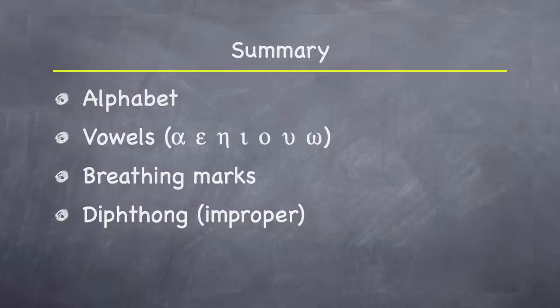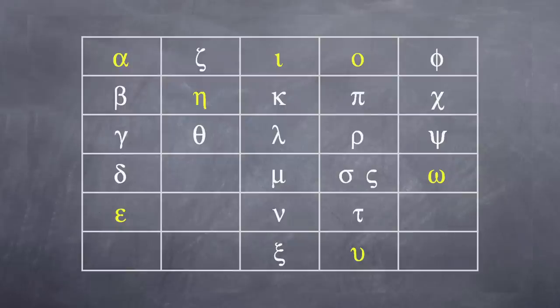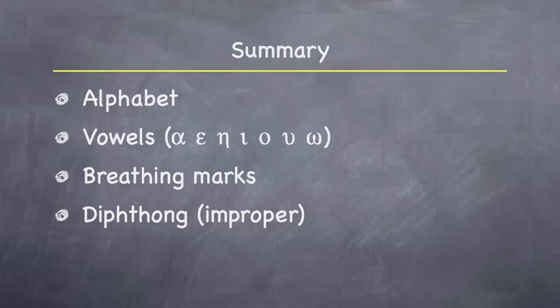At the end of every chapter I put up a summary. We learned the alphabet: alpha, beta, gamma, delta, epsilon, zeta, eta, theta, iota, kappa, lambda, mu, nu, xi, omicron, pi, rho, sigma, tau, upsilon, phi, chi, psi, omega. We learned that the seven vowels are alpha, epsilon, eta, iota, omicron, upsilon, omega.